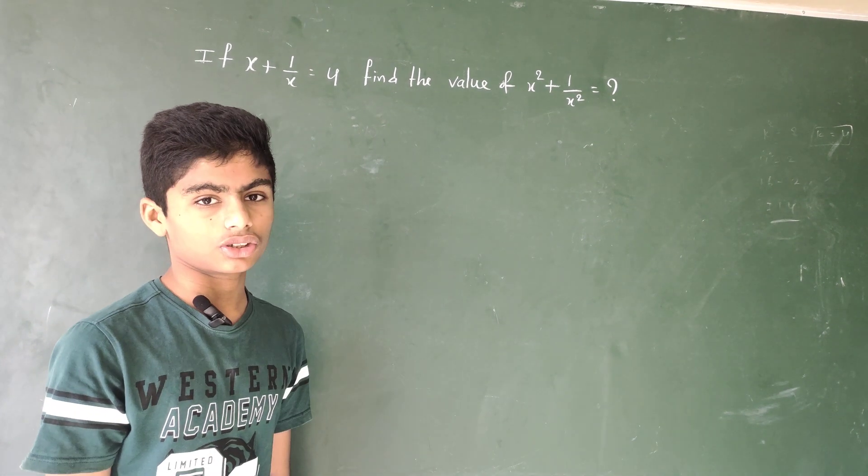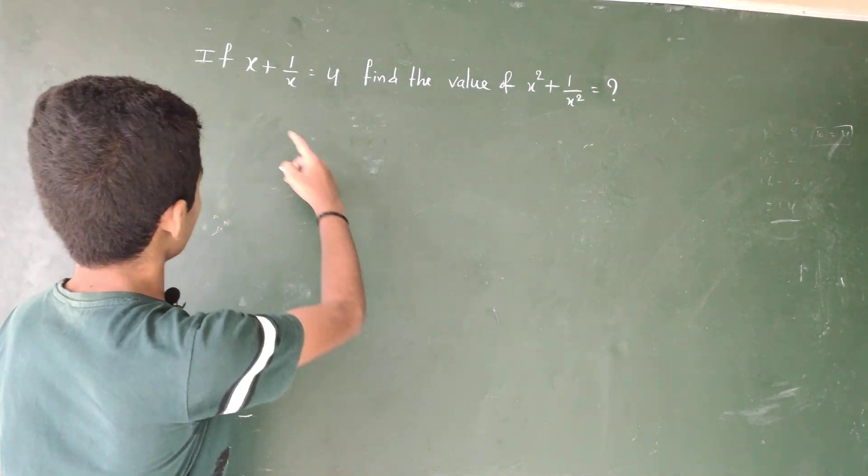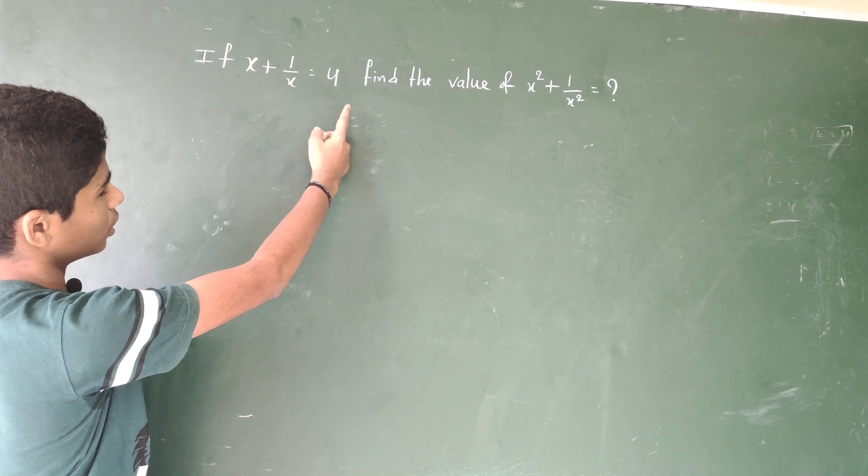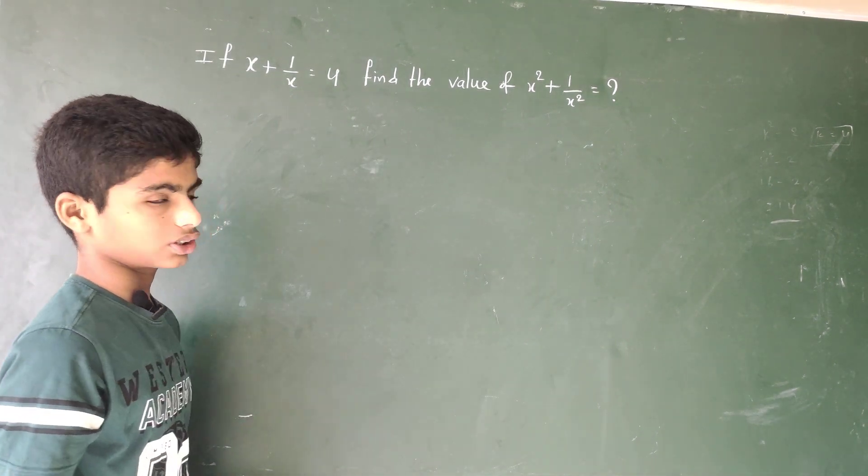Hi friends, we have an algebraic identity problem. If x plus 1 by x is equal to 4, find the value of x square plus 1 by x square.